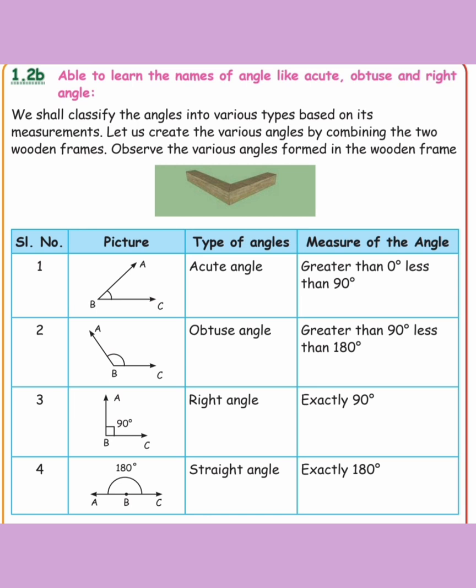An obtuse angle is greater than 90 degrees and less than 180 degrees.